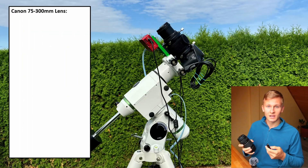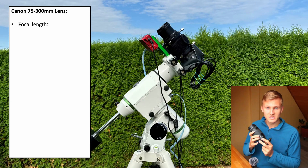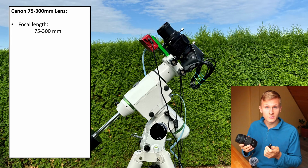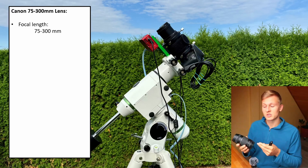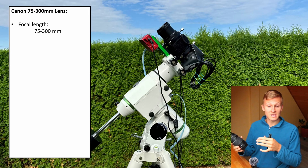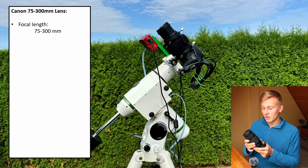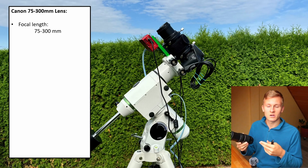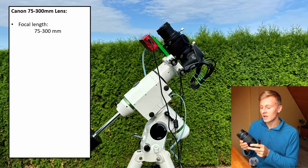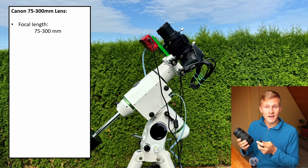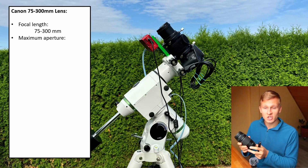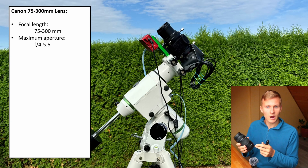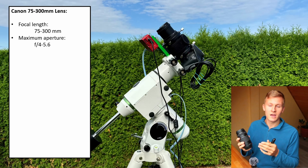First of all, I would like to introduce that specific lens to you. This lens is a zoom lens, which means you can choose between different focal lengths — in this case between 75 and 300 millimeters, which is definitely a great range for deep sky astrophotography. Another aspect that is very important is the maximum aperture, because we would like to capture as much light as possible in a given period of time.